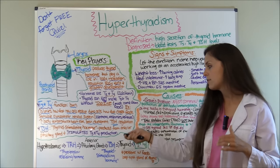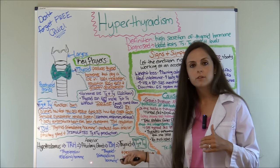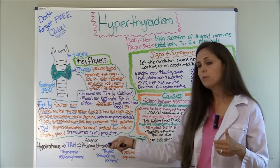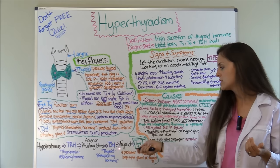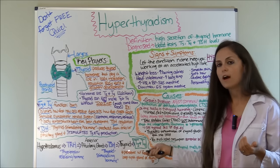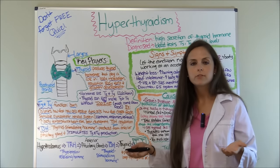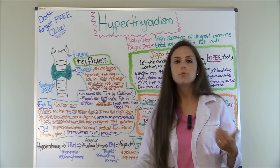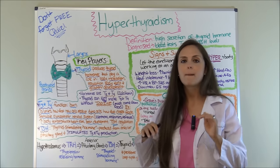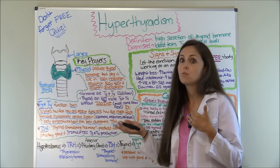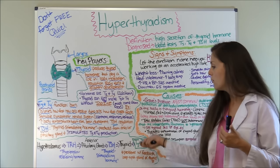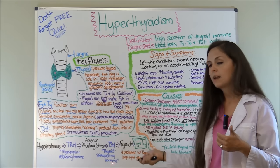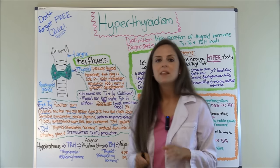If there are any problems in this loop — for instance, if the anterior pituitary gland had a tumor — it wouldn't be able to secrete TSH, so the thyroid just wouldn't release T3 or T4, and you'd have hypothyroidism even though there's nothing wrong with the thyroid itself. It can happen vice versa as well, so keep that in mind.